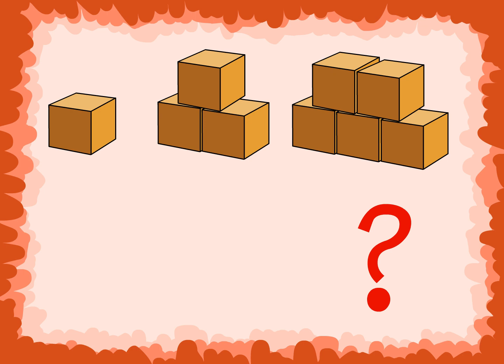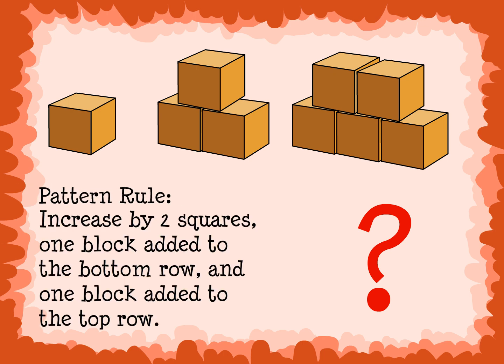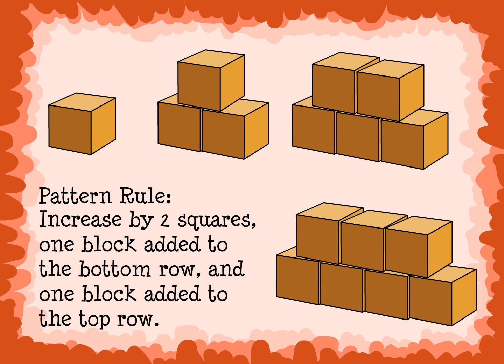The number of blocks increases or goes up by two each time. Also, think about the placement of the blocks. The pattern rule for this example is increase by two squares: one block added to the bottom row and one block added to the top row. This is the next set in the pattern.